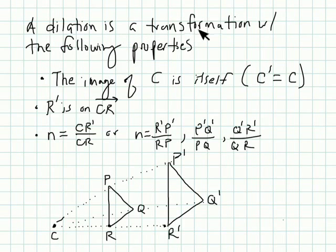So again, a dilation is a transformation with the following properties. First of all, the image of C, of the pre-image of C, is itself. So again, the image will be in the same spot or equal to the pre-image of C. So the center of dilation, again, never moves. That was part of the definition that we looked at of a dilation is its center of dilation does not move.